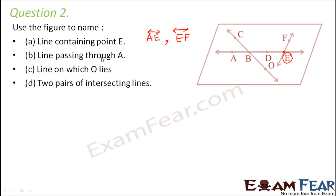Line passing through A. So where do you have A? This is A. Which line is passing through point A? Again that is AE.